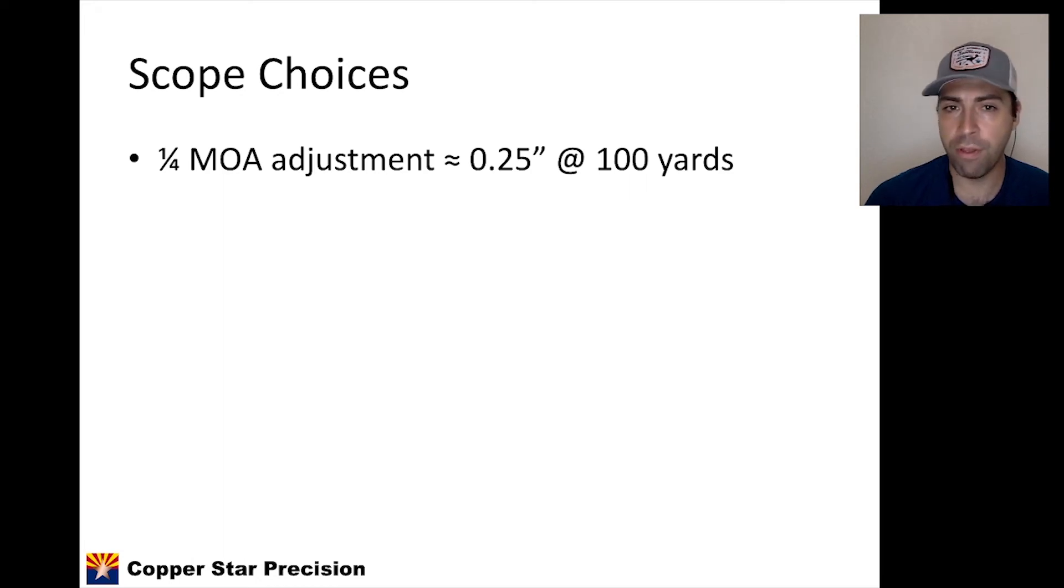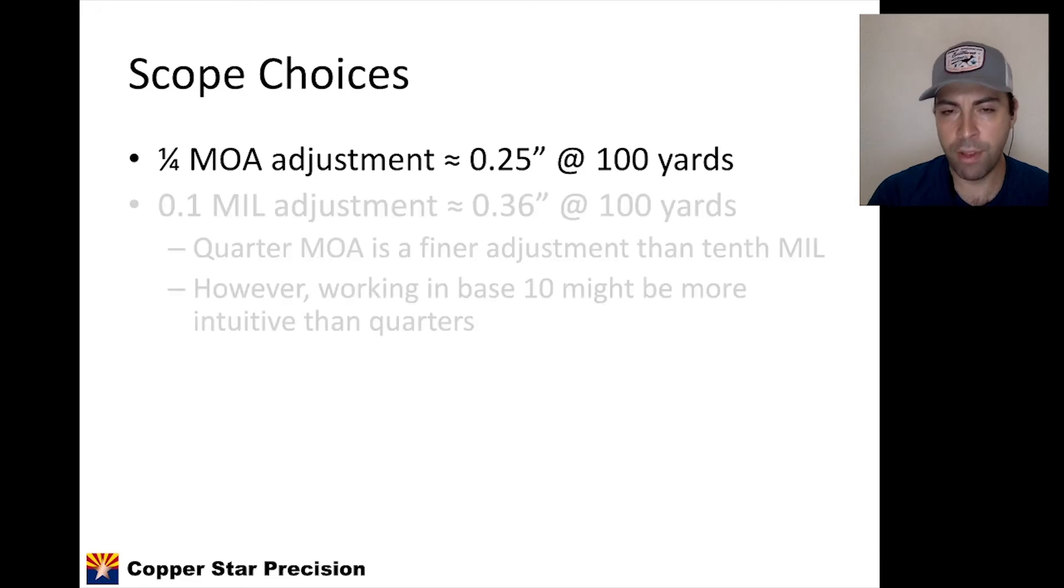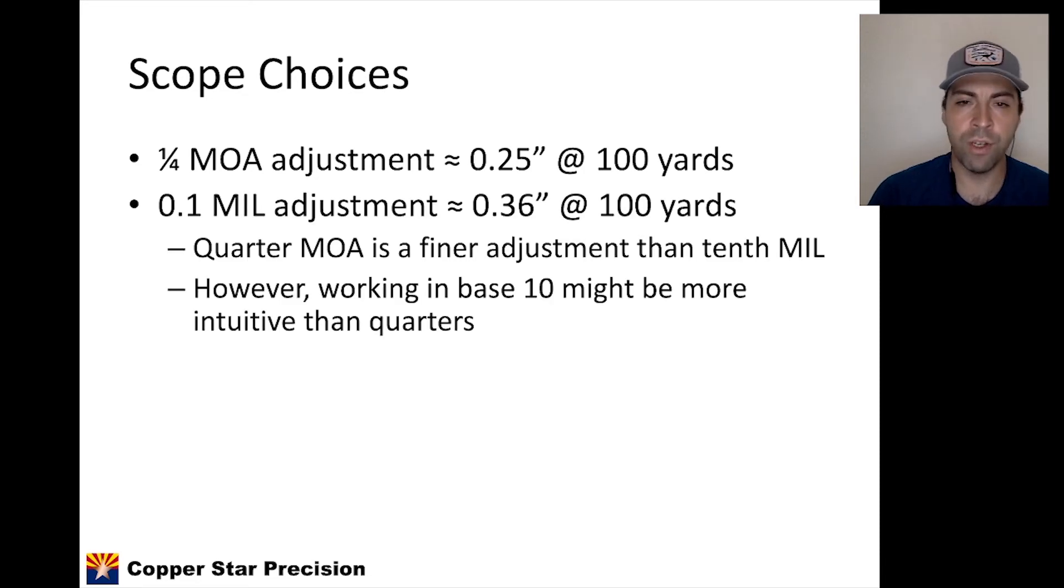So remember that one MOA is about an inch at 100 yards, so a quarter MOA is one-fourth of that, or a quarter inch, 0.25 inches, at 100 yards. So each click adjustment on the scope turret should move the point of impact a quarter of an inch at 100 yards. It would move it half an inch at 200 yards. It would move it an eighth of an inch at 50 yards. And we're going to talk about this in future videos. This is just defining terms here. One-tenth of a mil - remember that a mil was 3.6 inches at 100 yards. So if we divide that by 10, we get 0.36 inches at 100 yards. So they're relatively close, within a tenth of an inch. But you notice that a quarter MOA is a finer adjustment than a tenth of a mil.